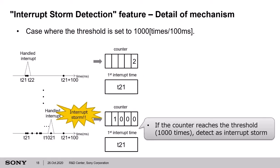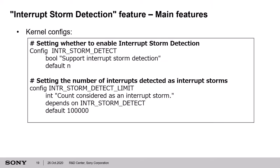If the counter reaches the threshold value within 100 ms, an interrupt storm is detected.